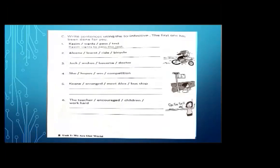There are some words given — for example, 'Kasi,' 'wants,' 'pass,' 'test.' By the help of these words we will make sentences. Number one: Kasi wants to pass the test. To make the sentence, first write the subject — the doer of the action — then the first form of the verb, then the to-infinitive, then the object.